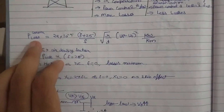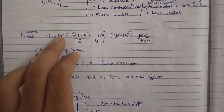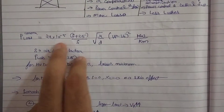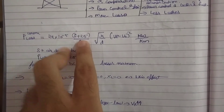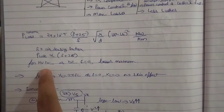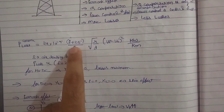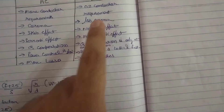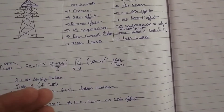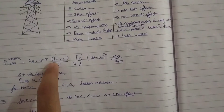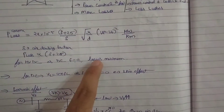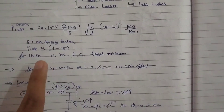If I talk about corona loss, the formula is 2.4 × 10⁻⁵ × (F + 25) / δ. This means corona loss is directly proportional to frequency. So for HVDC, frequency is zero, and the corona loss formula gives only the 25 component — not zero, but significantly less. Therefore, DC has less corona loss.